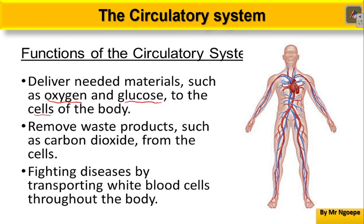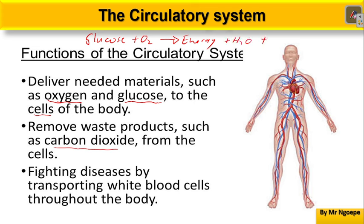Just imagine your legs when you're running — they need glucose and oxygen to perform cellular respiration so that they can produce energy. Your circulatory system, mainly your blood, delivers oxygen and glucose. Subsequently, your circulatory system will also remove waste products such as carbon dioxide from those muscles. Remember, cellular respiration is your glucose reacting with oxygen to produce energy, and the byproducts of that reaction will be H₂O and carbon dioxide.